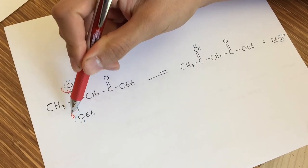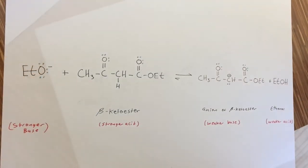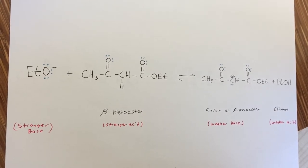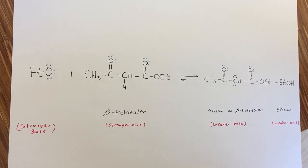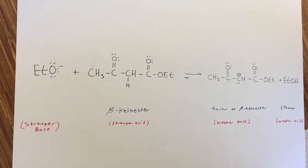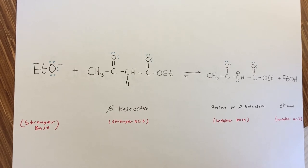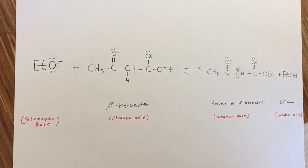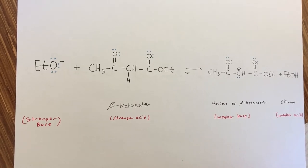This gives us the beta-ketoester. The overall condensation is driven to completion by the acid-base reaction between the beta-ketoester, which is the stronger acid, and the ethoxide ion, which is the stronger base, to give ethanol, which is the weaker acid, and the anion of the beta-ketoester, which is the weaker base.